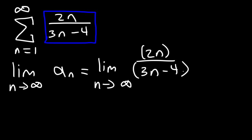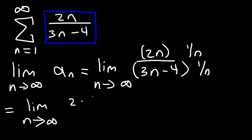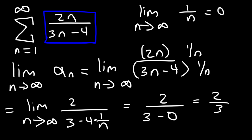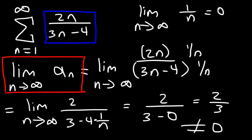What we're going to do is multiply the top and the bottom by 1 over n. So this is going to be 2 divided by 3 minus 4 times 1 over n. Keep in mind the limit as n approaches infinity for 1 over n will always be 0. So this is going to be 2 divided by 3 minus 0, which is 2 over 3. Therefore, the limit as n approaches infinity for a sub n does not equal 0 — in fact, it's equal to 2 over 3.